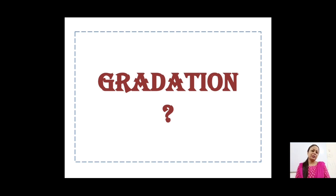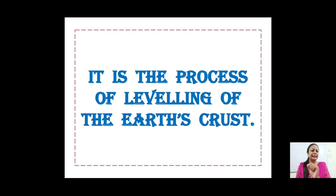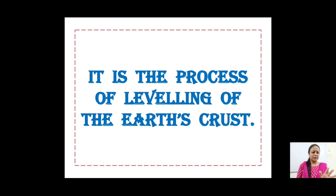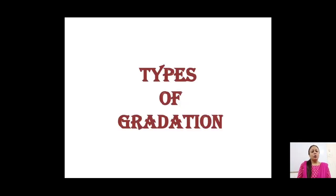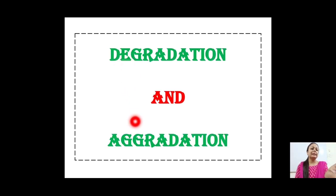The next term is gradation, defined as the process of levelling of the earth's surface — bringing balance and uniformity. The earth's surface is very high in some places like mountains and very deep in others like valleys. Earth processes continuously strive to bring equilibrium using two ways: degradation, which is the removal or erosion of material, and aggradation, which is addition or deposition.